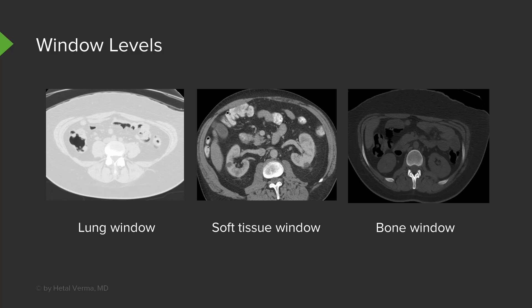Here is an example of three different types of window levels. On the left, we have lung windows, which create a very white appearance — best for viewing the lungs and also very useful for evaluating free air. In the middle is the soft tissue window, used most commonly to look at the solid organs of the abdomen. On the right is the bony window, used to examine bony structures. When reviewing a CT scan, I scroll through using each of these windows because each one shows something different.